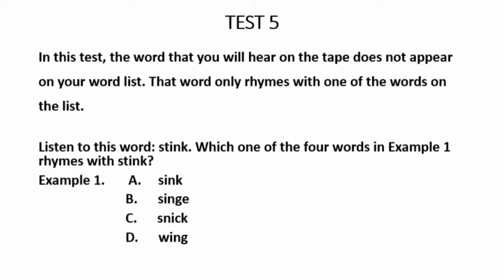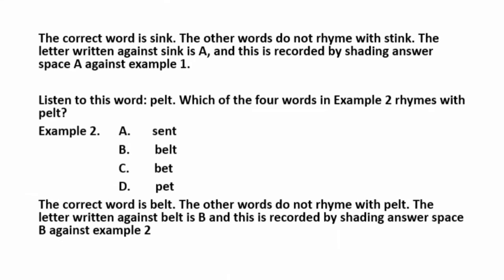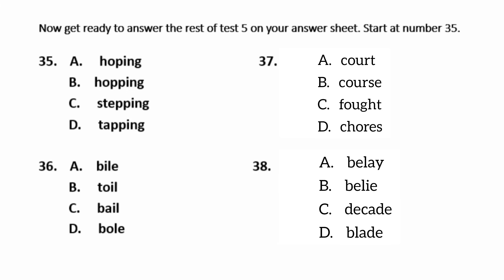Test 5. In this test, the word that you will hear on the tape does not appear on your word list. That word only rhymes with one of the words on the list. Listen to this word: Stink. Stink. Which one of the four words in example 1 rhymes with stink? The correct word is sink. The other words do not rhyme with stink. The letter written against sink is A, and this is recorded by shading answer space A against example 1. Listen to this word: Pelt. Which one of the four words in example 2 rhymes with pelt? The correct word is belt. The other words do not rhyme with pelt. The letter written against belt is B, and this is recorded by shading answer space B against example 2. Now get ready to answer the rest of test 5 on the answer sheet. Start at number 35.